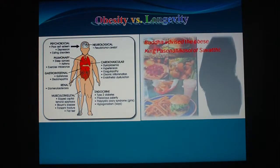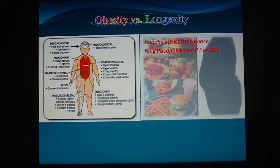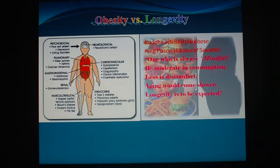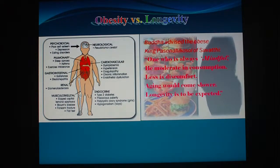The Buddha advised the obese King Pasenadi Kosala of Savatthi, which was the largest kingdom during the Buddha's time. The king loved the Buddha so much he would kneel down to kiss the Buddha's feet. A very obese person trying to kneel down takes great effort. Out of compassion, the Buddha cited: 'One who is always mindful, be moderate in consumption — less is discomfort. Aging would come slower. Longevity is to be expected.'